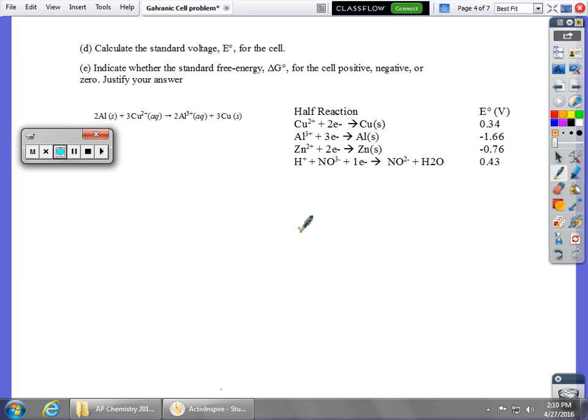All right guys, back with part two of our galvanic cell review. We're going to be looking at the second parts of this question, parts D, E, and F. Part D asks us to calculate a standard cell potential or standard cell voltage.